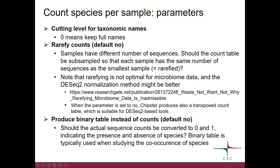You can also select if you want to produce a binary table instead of a count table — the default is no. A binary table means that if a certain species is detected, the table says one, and if it's not detected, the table says zero. This kind of binary table is typically used when studying co-occurrence of species.